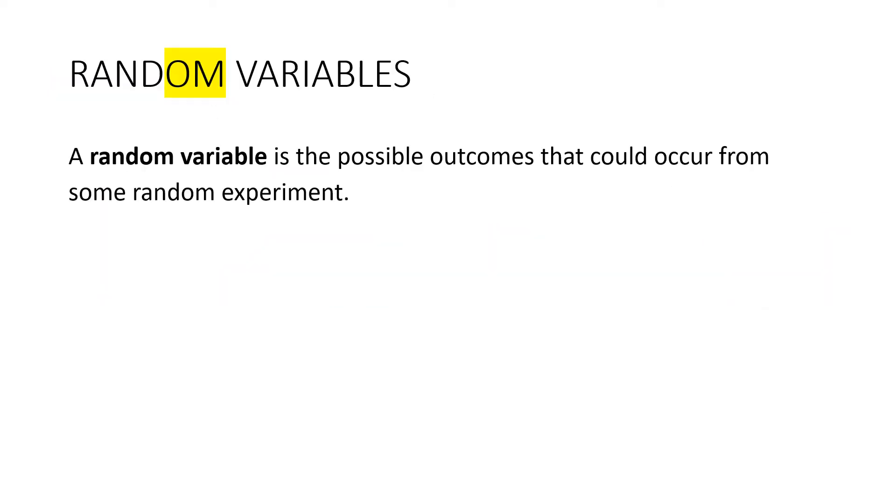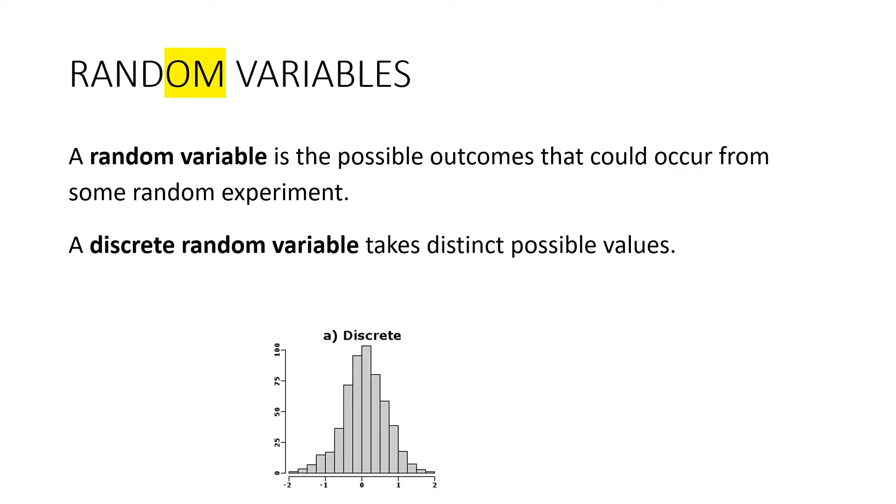So let's begin with a definition of a random variable. It's just the possible outcomes that could occur from some random experiment. And this is an area of mathematics where statistics meets probability. It's not particularly difficult, but it is strange. So I'll ask you to bear with me for a bit. A discrete random variable takes distinct possible values. And we've talked about discrete data in the past with probability. There's a picture there of discrete data.